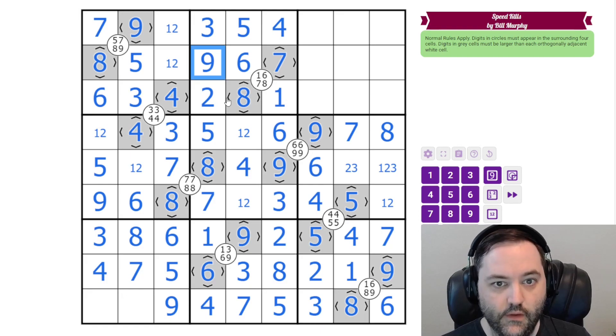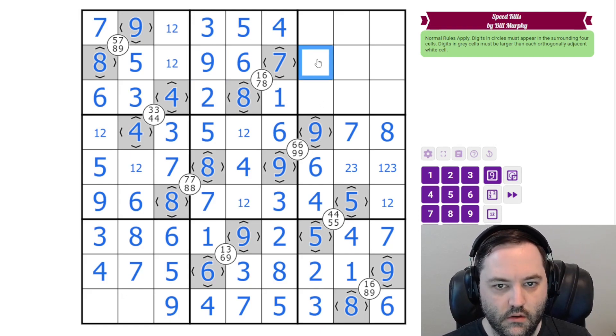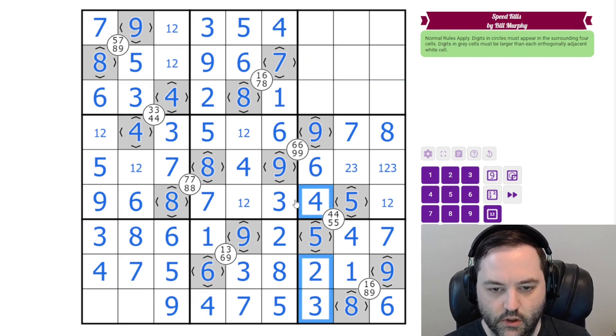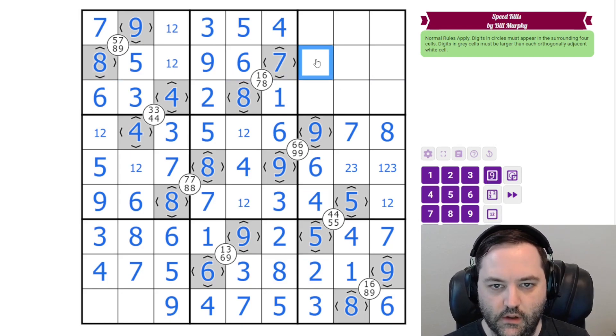3 and 9 in this box. This has to be less than 7, but it's going to be regardless. But looking at the column and at the row, the only digit we are missing is 1. So that's 1, 2, 1.